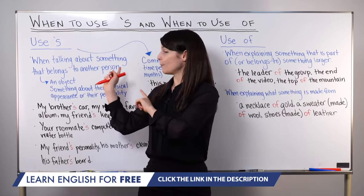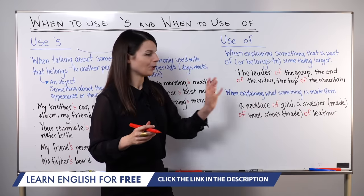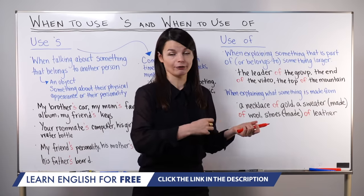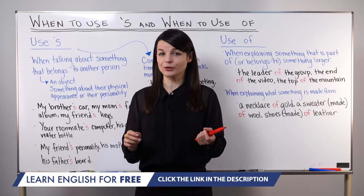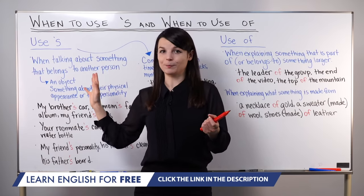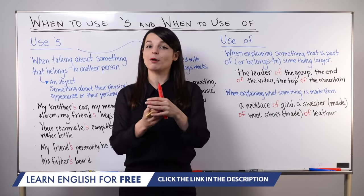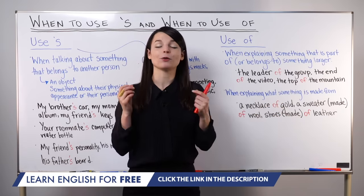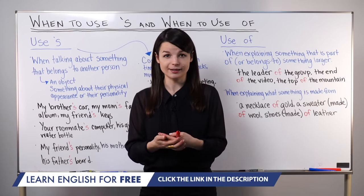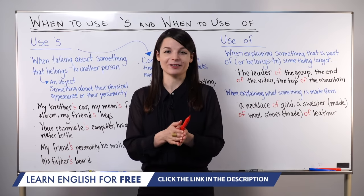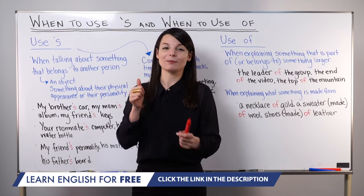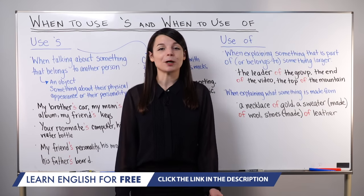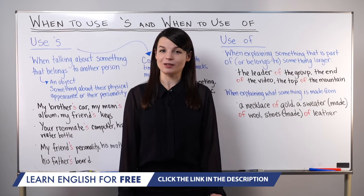I hope this lesson gives you a good guideline for when to use apostrophe S and when to use 'of.' Remember, apostrophe S is natural when you're talking about people and things that belong to people. Use 'of' when talking about something that is part of something else, or when describing the materials used to make something. If you have any questions or want to practice, feel free to do so in the comment section. If you liked this lesson, give it a thumbs up, subscribe to our channel, and check us out at EnglishClass101.com. Thanks very much for watching — see you again soon. Bye-bye.